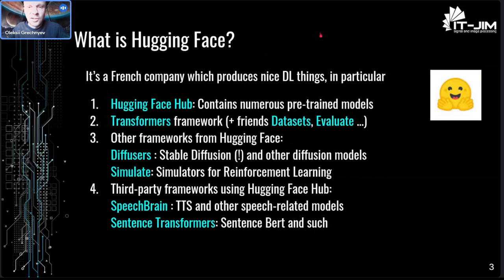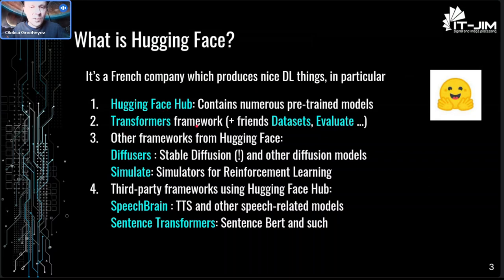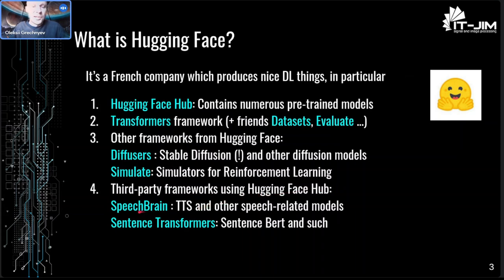In particular, Hugging Face Hub - it's an internet hub with numerous pre-trained models. There's the Transformers framework which we are going to discuss today, and its friends such as datasets, evaluate, and so on. There are also other frameworks from Hugging Face, for example diffusers, which contain Stable Diffusion. And don't confuse those with third-party frameworks not from Hugging Face, such as SpeechBrain and Sentence Transformers.